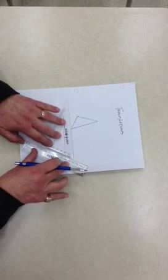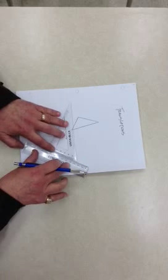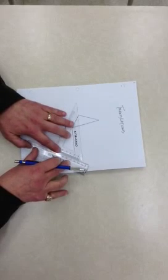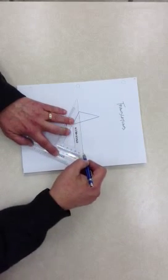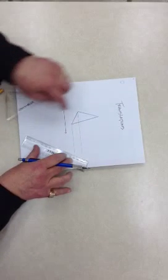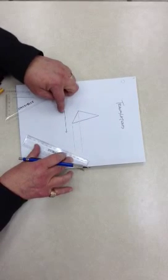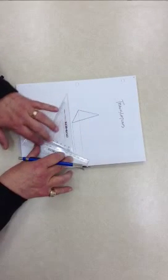Then, holding the ruler securely, slide the set square up to the next vertex of the triangle and carefully draw your second line coming out of the second vertex parallel to the translation line. The ruler never moves.